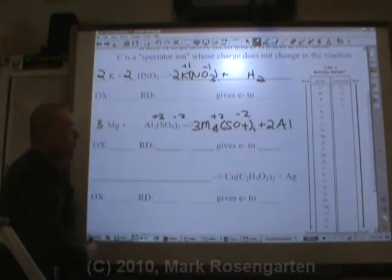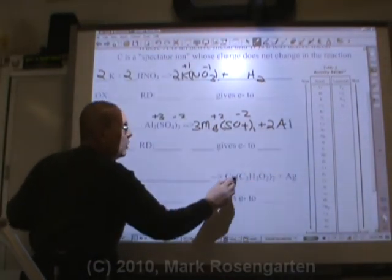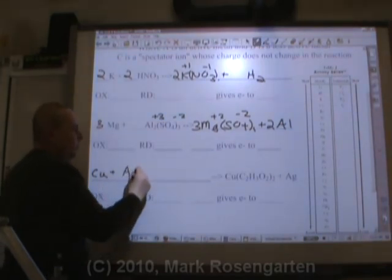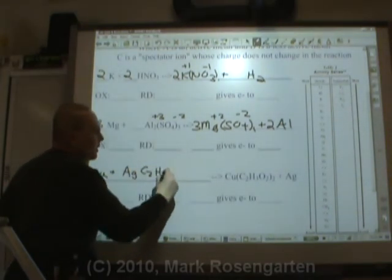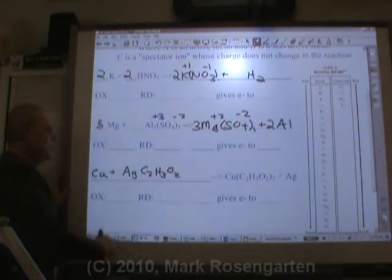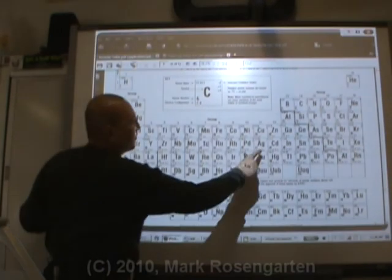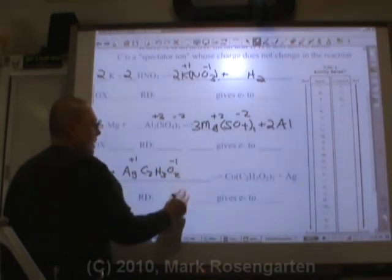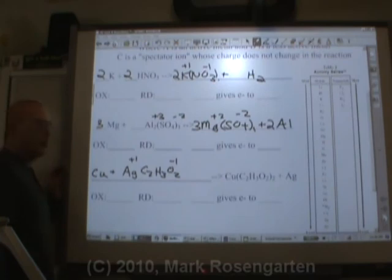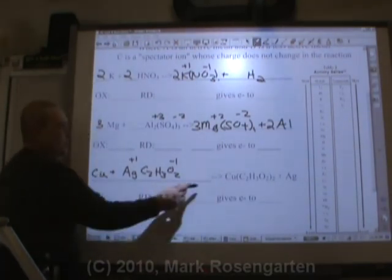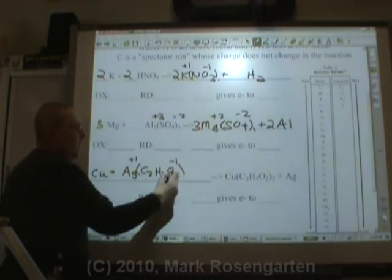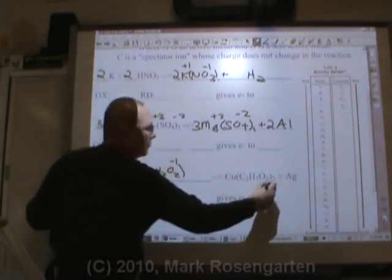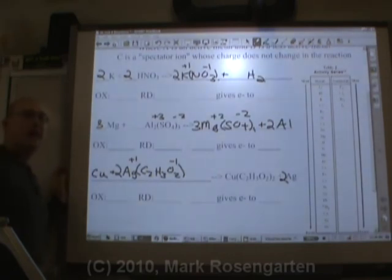Now, to make these as products, originally the copper was by itself and the silver was in the compound. So we're going to start off with copper by itself because copper took silver's place. And the silver was together with the C2H3O2, the acetate ion. Silver has a charge of plus one, acetate has a charge of minus one. Let's balance it. One copper, one copper. One silver, one silver. One acetate, two acetates. So we put a two in front to balance it. That means we've got to fix silver by putting a two in front of that. Now it's completely finished and balanced.